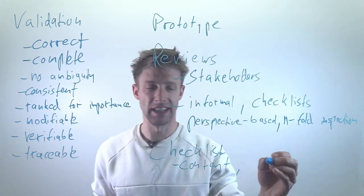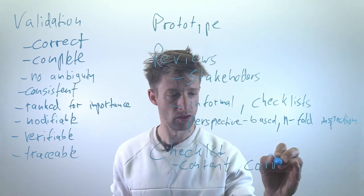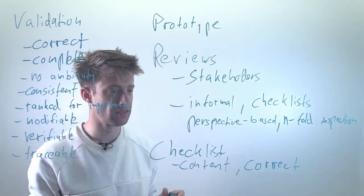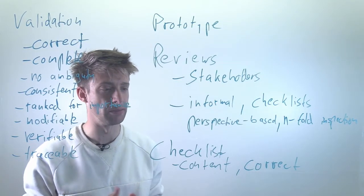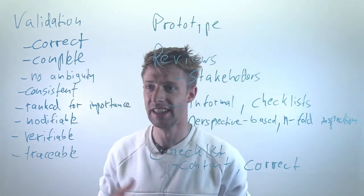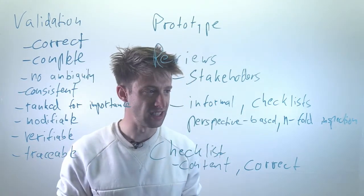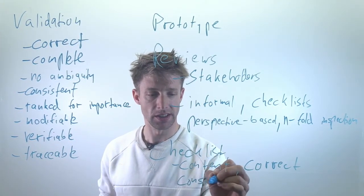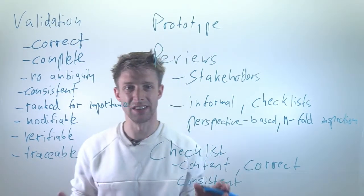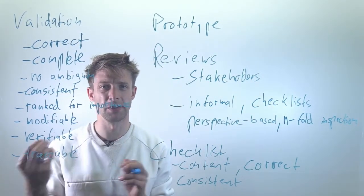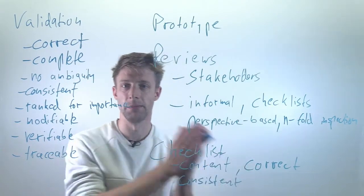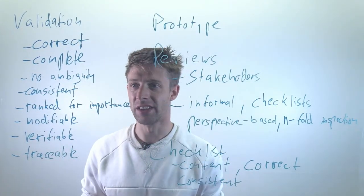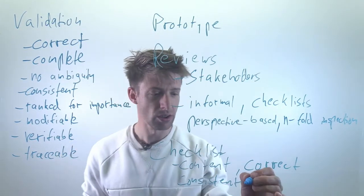You might have a correctness check. It says, okay, are the identified requirements, are they actually relevant? Are they actually stakeholder needs? You might have a consistency check. So asking, okay, are there any conflicts between the requirements? Looking at the quality requirements and the functional requirements, are they anyhow in direct conflict? And you have to cross that off.